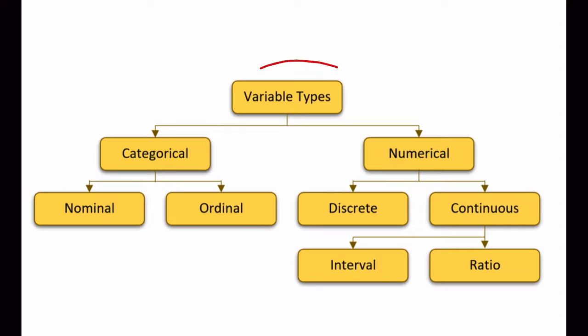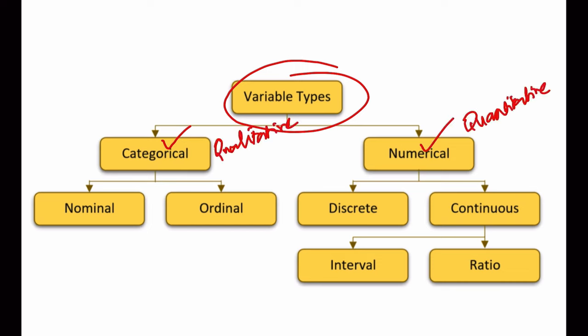Statistically, variables can be classified into two types: categorical or qualitative variable, and numerical or quantitative variable. Categorical variables represent groupings of some kind, while the numerical or quantitative variable quantifies some amount.